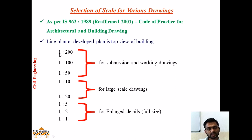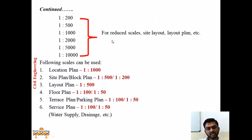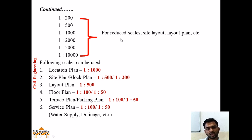The basic scale: what does 1:200 mean? The 1 represents the dimension on the ground and 200 represents 200 parts of that dimension on paper. For reduced scale drawings such as site layout and layout plan, the following scales are used as per IS 962: 1:200, 1:500, 1:1000, 1:2000, 1:5000, or 1:10000.